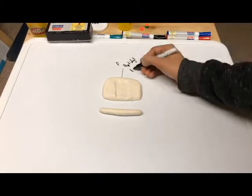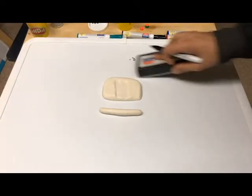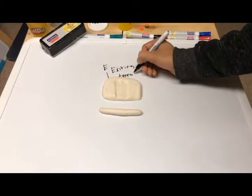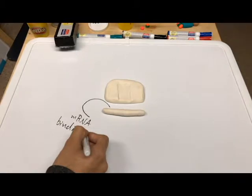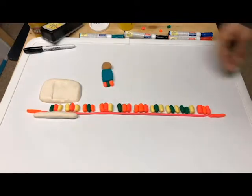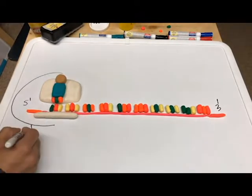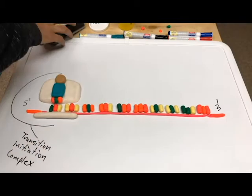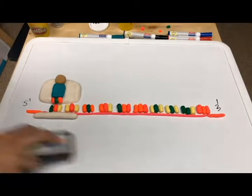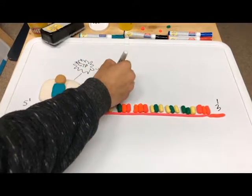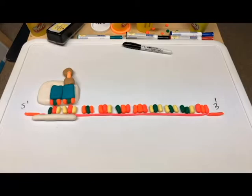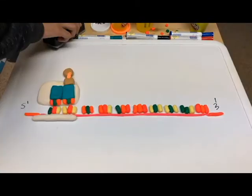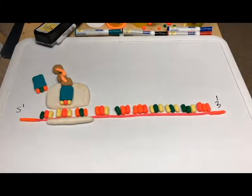Deoxyribonucleic acid contains your genetic code. DNA is a molecule that makes up all your chromosomes, double helix structure — a two-stranded spiral. Set of instructions for your cells. They keep proteins from amino acids; the complete set of genetic instructions is a genome. Nucleotides are composed of a phosphate, nitrogen base, and deoxyribose. The nucleotide bases are adenine, thymine, cytosine, and guanine. A always pairs with T, C always pairs with G.